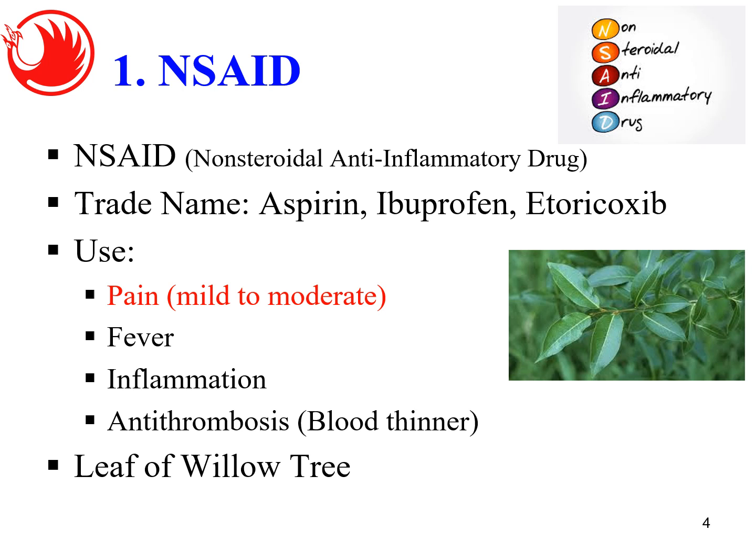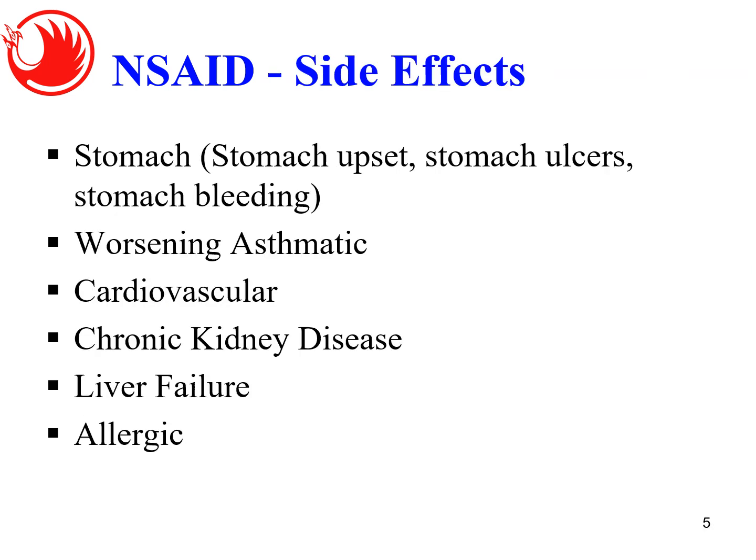The side effects of NSAID most commonly affect the stomach. The drug will reduce the protection layer of the stomach, what we call stomach mucus. The stomach has a protection layer to protect the stomach lining from being attacked by stomach acid, which is quite acidic and able to dissolve solid food. Without that stomach mucus protection, the stomach can get damaged or injured easily, forming a stomach ulcer and even stomach bleeding, and you may always have stomach upset problems.